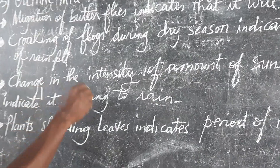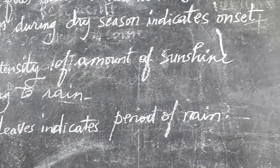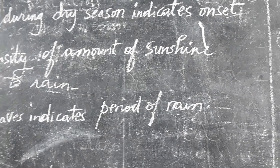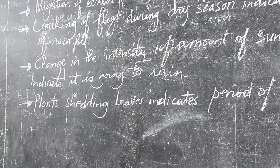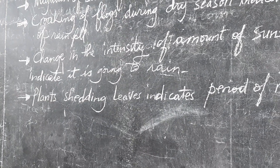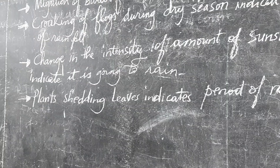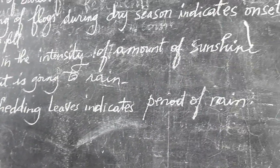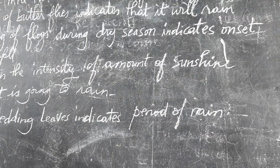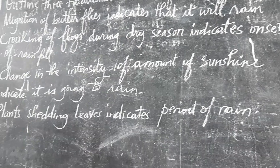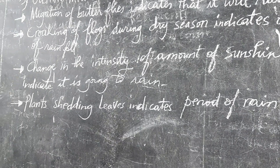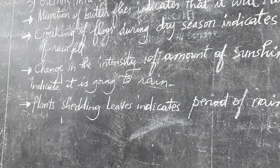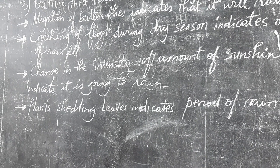Method number three: a change in the intensity of sunshine indicates it is going to rain. Even people nowadays still use this traditional method — when you find that the amount of sunshine is reducing, people start imagining that rain is going to take place.